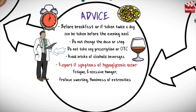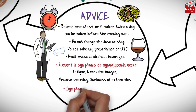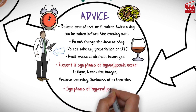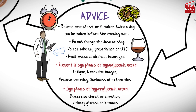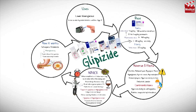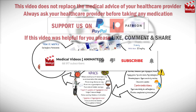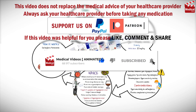Also notify your healthcare provider if symptoms of hyperglycemia occur, such as excessive thirst or urination, or urinary glucose or ketones. That's all for this video — subscribe and click on the bell icon for more animated medical videos like this one.